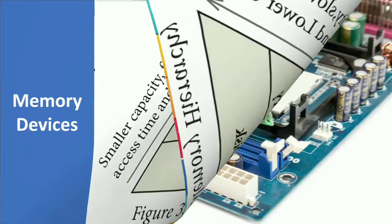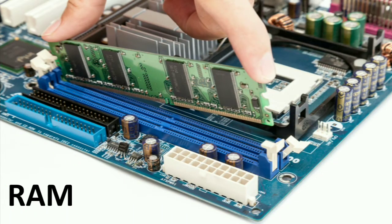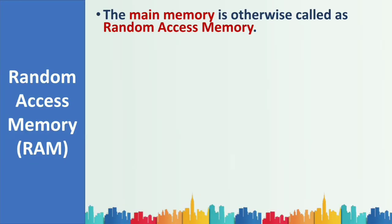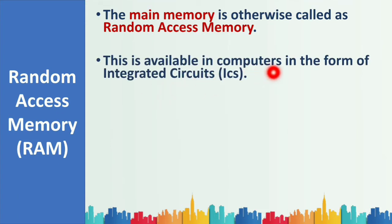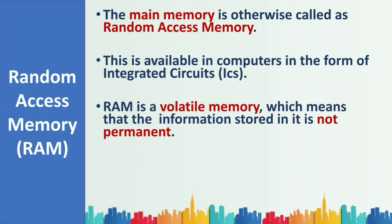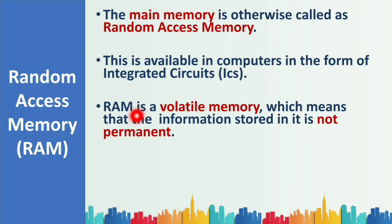Now let's discuss Random Access Memory — RAM. RAM is also called main memory and is available in computers in the form of integrated circuits attached to the circuit board. RAM is a volatile memory, which means information stored in it is not permanent. If you turn off the system, data stored in RAM will be erased.